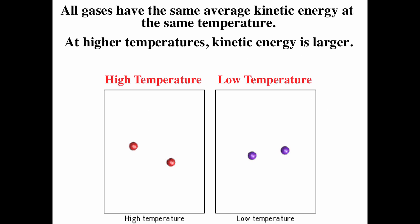Thinking about kinetic molecular theory — all gases have the same average kinetic energy at the same temperature. Temperature is a measure of kinetic energy at the atomic level. Higher temperatures give you a higher average kinetic energy. Gas molecules are in constant motion and frequently collide with one another.